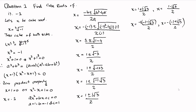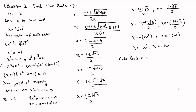Now the term minus 1 minus iota root 3 divided by 2 is equal to omega squared, and minus 1 plus iota root 3 divided by 2 is equal to omega. So we have x equals minus omega squared and x equals minus omega. Therefore the three cube roots of minus 1 are: minus 1, minus omega, and minus omega squared.